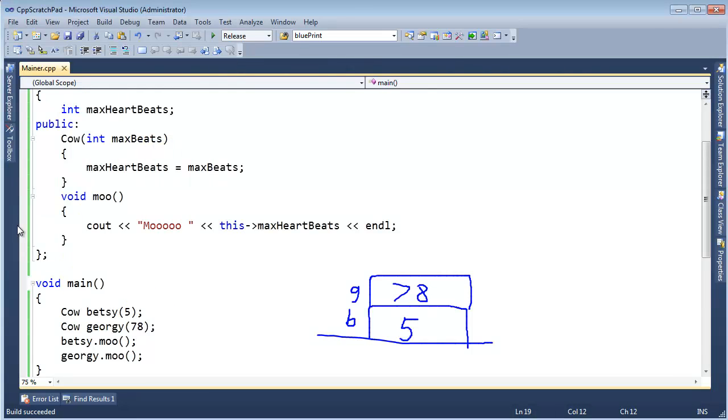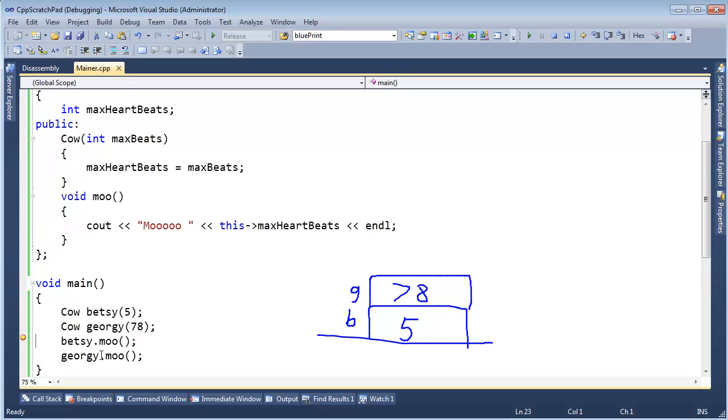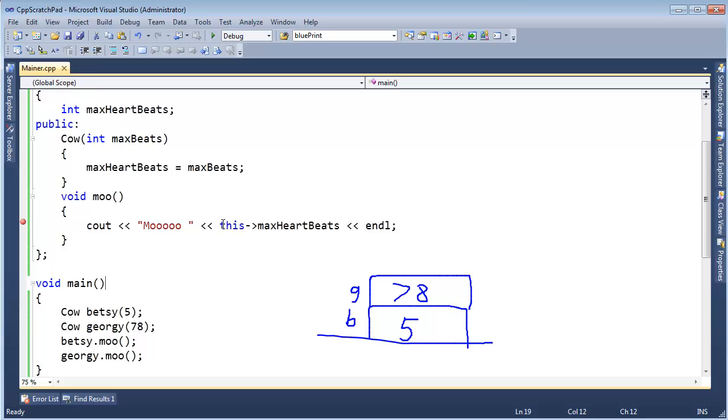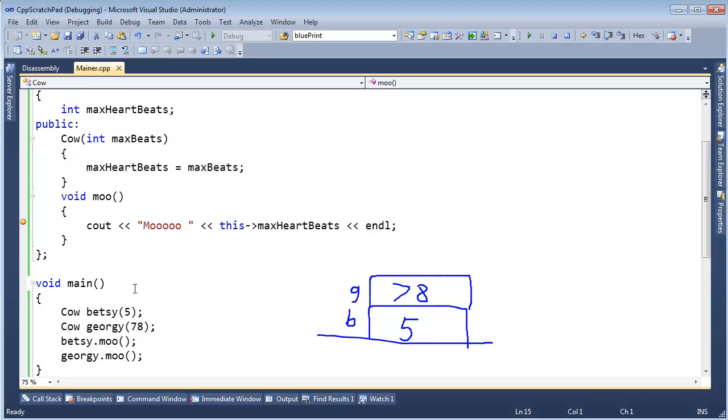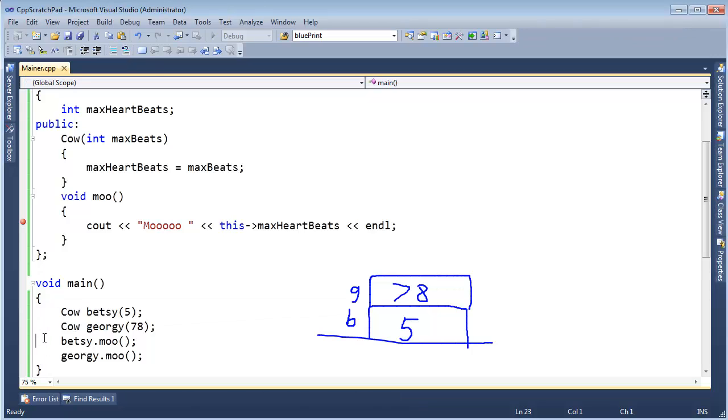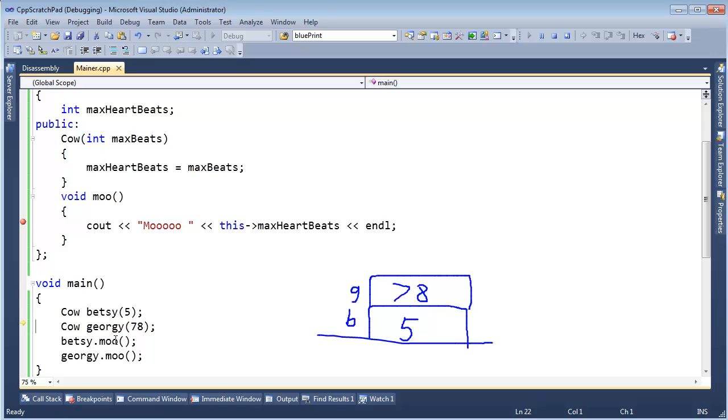All right, but really, the compiler has to resolve that max heartbeats, and determine what's the address of that at runtime, and all that, and so really, there is an implied this right there. Now, I can run this, and it won't change the output at all. I have 5 and 78. Let me put a break point here, and fire up the debugger by hitting F5, and right now, it inlined it. How interesting. It inlined it, because I have it set to release. Let's set it to debug, so it won't inline it for us.